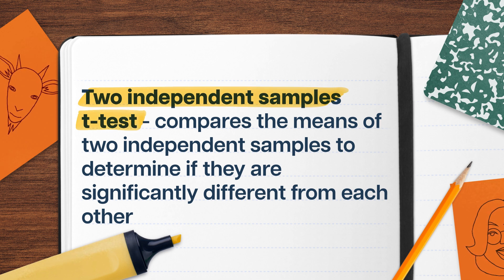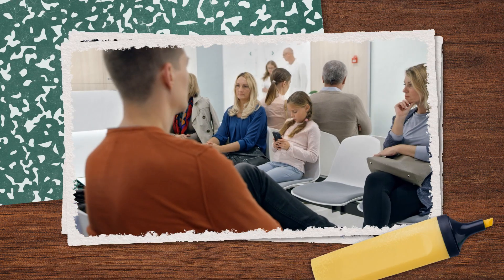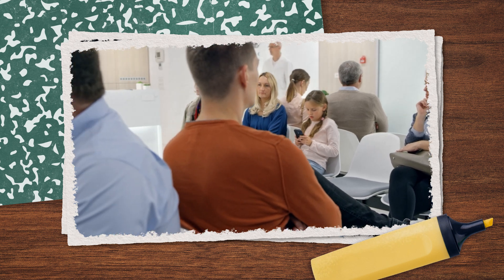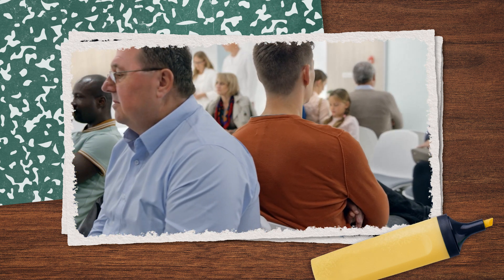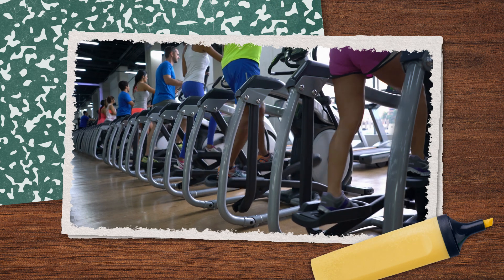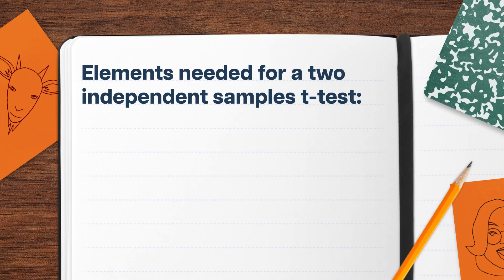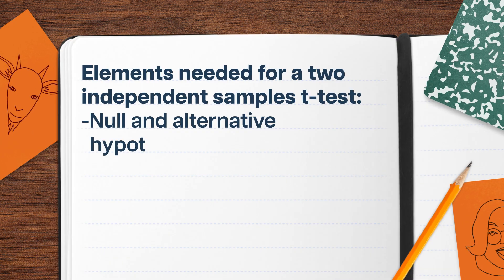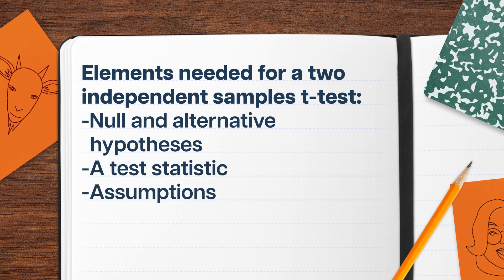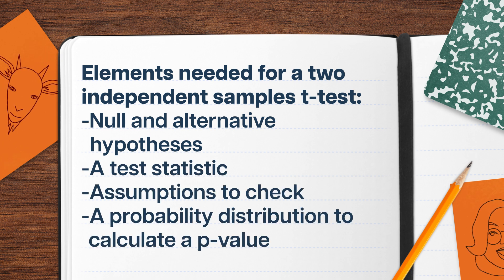All of the properties we do have lead us to the two independent samples t-test — a type of hypothesis test that helps us determine whether the unknown population means of two groups are equal or not. It's super useful in all kinds of situations, like determining if different geographic groups have equal access to healthcare resources, or whether morning exercisers go to the gym more times per week than the afternoon variety. For a two independent samples t-test, we'll need null and alternative hypotheses, a test statistic, assumptions to check, and a probability distribution to calculate a p-value that will ultimately help us make a decision.